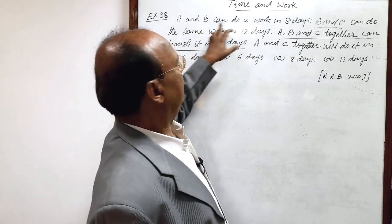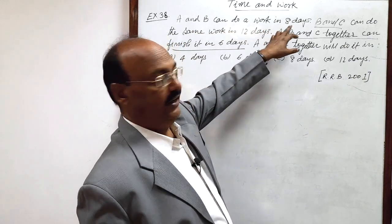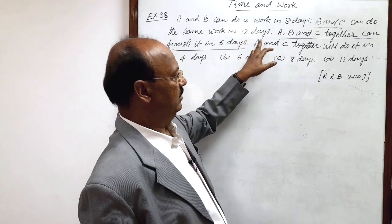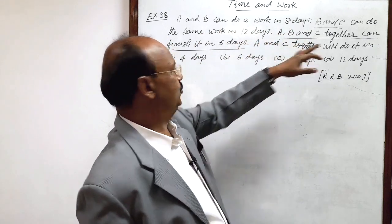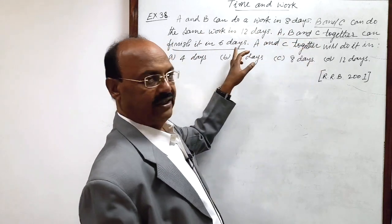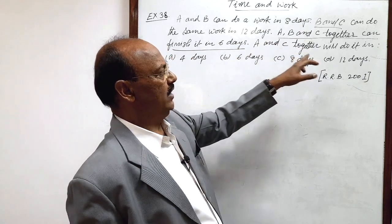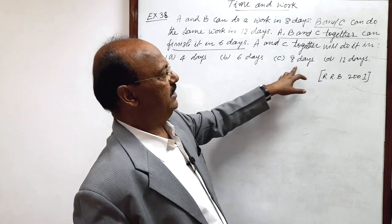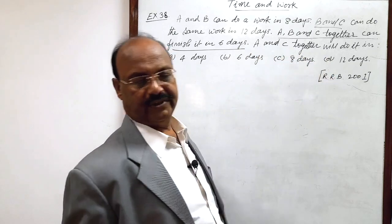Here the question is: A and B can do a work in 8 days, B and C can do the same work in 12 days, A, B and C together can finish it in 6 days. A and C together will do it in how many days? 4 days, 6 days, 8 days or 12 days. We have to select the correct option.